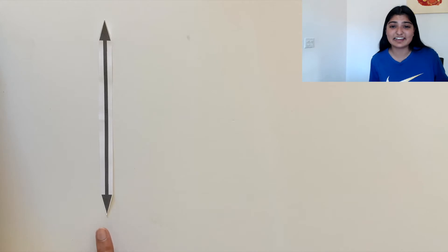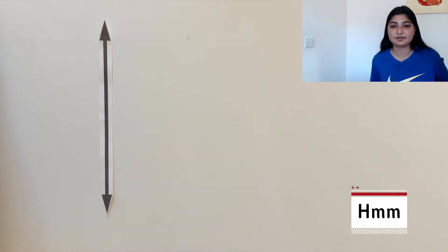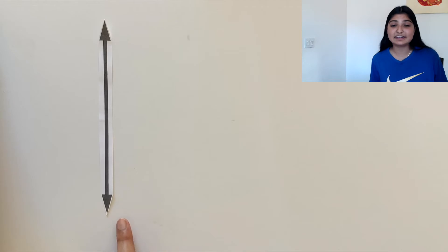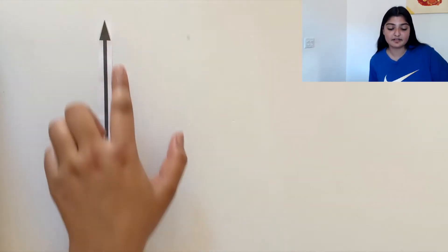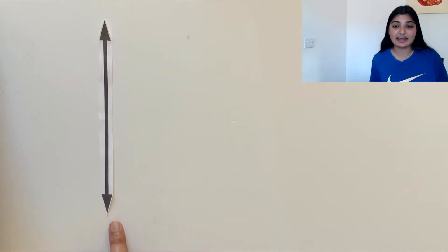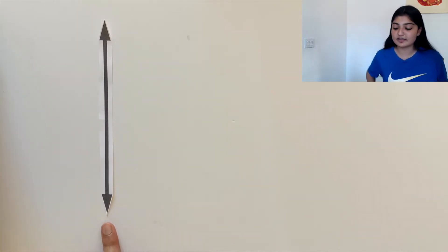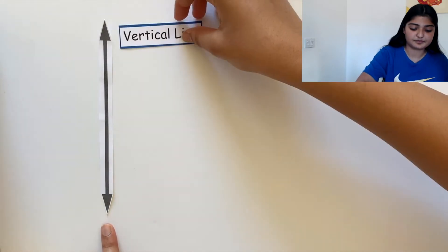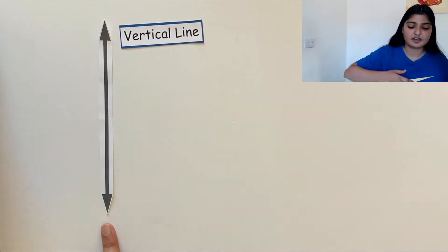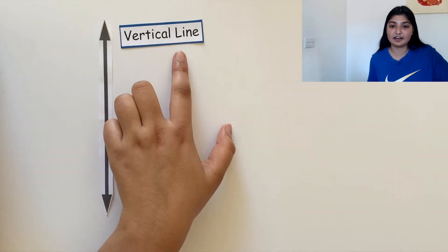Oh hey, here's a line. What would we call this line? It's straight and it continues endlessly up and down. We would call this line a vertical line.